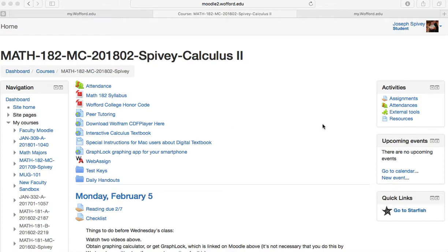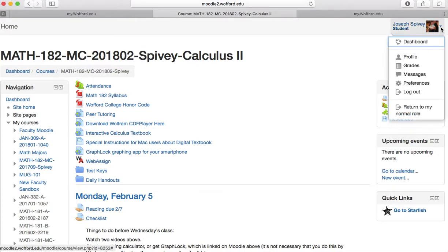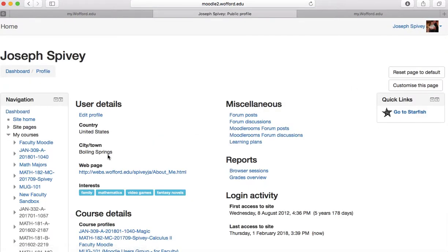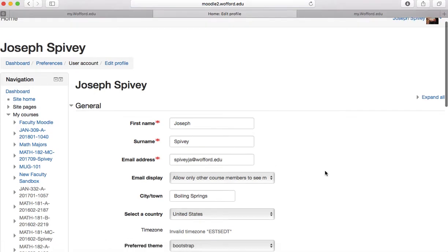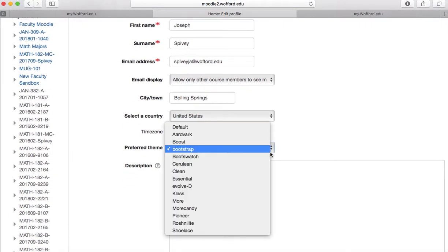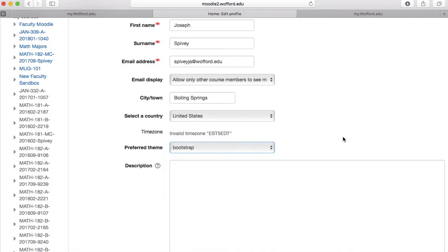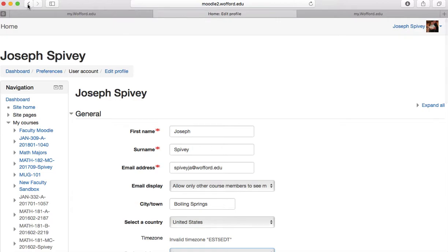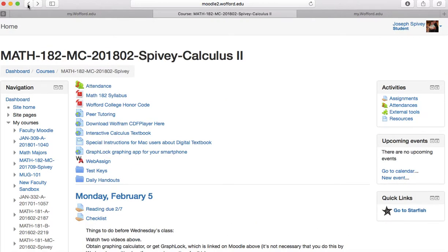First, notice that your Moodle site will probably look different. Each Moodle site has a theme, and I've chosen a theme that I like, but you can choose whatever theme you'd like in order to get it to display differently. Some work better with your mobile devices, and some don't. So if you want to change the theme, you come over here, and you go to your profile, and you go to Edit Profile. The preferred theme is here. You can choose a different theme. They've got a whole bunch of them, so you might want to play around with it and find one you like.